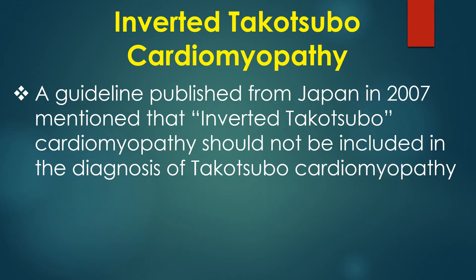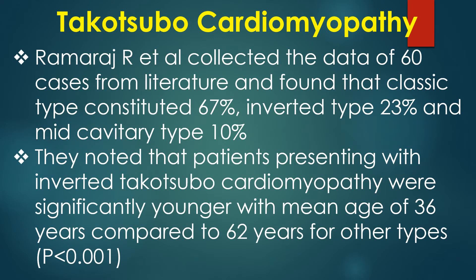A guideline published from Japan in 2007 mentioned that inverted Takotsubo Cardiomyopathy should not be included in the diagnosis of Takotsubo Cardiomyopathy. Ramraj and colleagues collected data from 60 cases in literature and found that the classic type constituted 67%, the inverted type 23%, and the mid-cavitary type 10%. Patients with inverted Takotsubo Cardiomyopathy were significantly younger, with a mean age of 36 years, compared to 62 years for the other types.